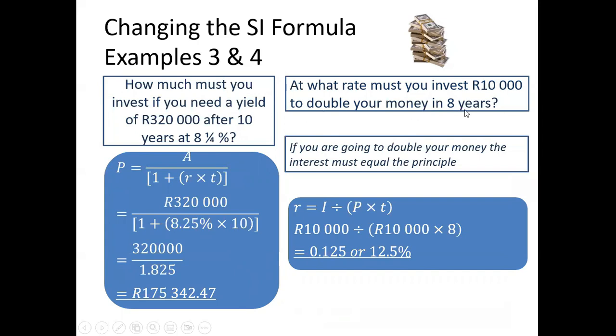Another one, at what rate must you invest R10,000 to double your money in eight years? Now, here you have to do a little bit of logic. If you are going to double your money, then the interest and the principle must be the same. That's the only way you're going to double your money. So here we have now R, our rate as the subject of the formula, divided by the interest, is equal to the interest divided by PT, our interest and our principle being the same. And then, if we replace the values, we get an amount here of 0.125, but we have to express it as a rate. If we express it as a rate, it means we must express it as a percentage. So we simply go and we move our comma two places to the right, and we see that the rate at which we're investing it to get this effect is 12.5%. So that is changing the simple interest formula.